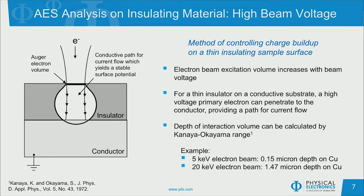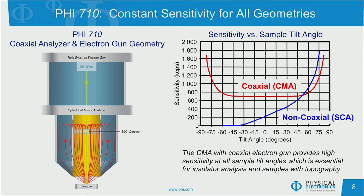For example, for a 5 kV electron beam on copper, the beam penetrates approximately 150 nanometers into the sample. For a 20 kV beam on the same copper, it will penetrate approximately 1400 nanometers into the sample. This is the method that we will use in this study of the alumina-supported catalysts. Furthermore, based on the geometry of the PHI-710 instrument, if we do need to tilt the sample, we will see constant sensitivity at multiple tilt angles, which is a benefit of the cylindrical mirror analyzer configuration of the 710, compared to a spherical capacitor analyzer that will have a sensitivity dependent on the tilt angle.